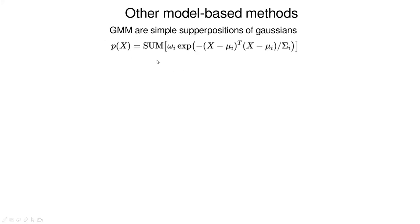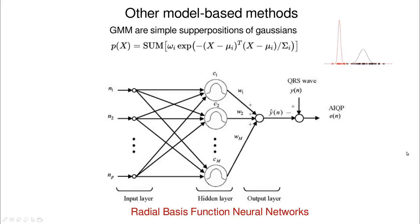There are other model-based methods. One idea is to replace the Gaussian mixture with something more sophisticated. My favorite is Radial Basis Function (RBF) neural networks, which share the Gaussian structure but add a full network architecture. In fact, a Gaussian Mixture Model is essentially an RBF neural network with a single output neuron, but you can build more sophisticated architectures on top of this.